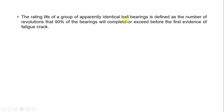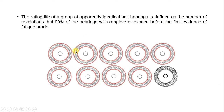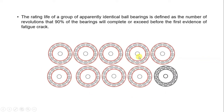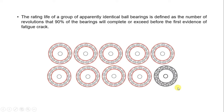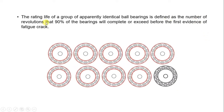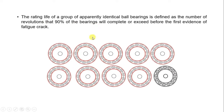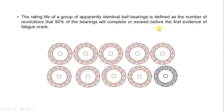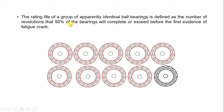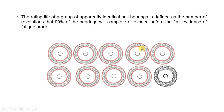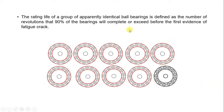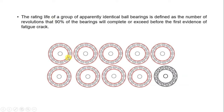The rating life of a group of apparently identical ball bearings is defined as the number of revolutions that 90% of the bearings will complete or exceed before the first evidence of fatigue crack. So from a group of bearings with the same configuration, 90% of those bearings will complete a certain number of revolutions before evidence of fatigue crack appears. That number of revolutions is considered the rating life of a ball bearing.